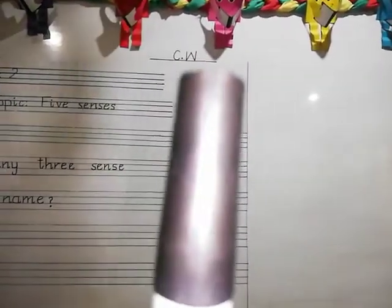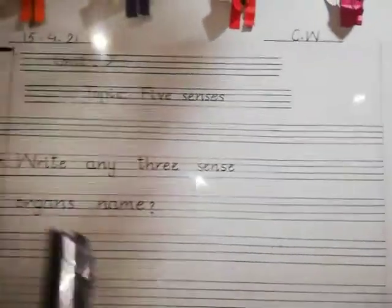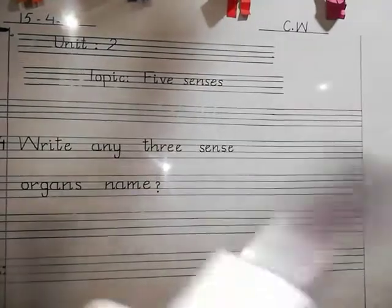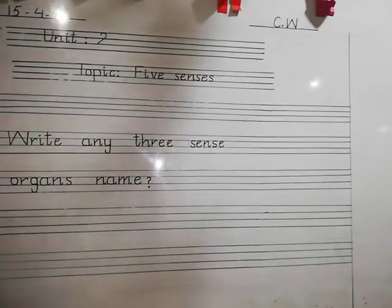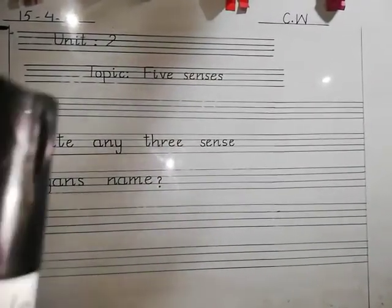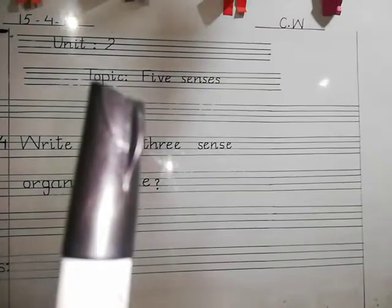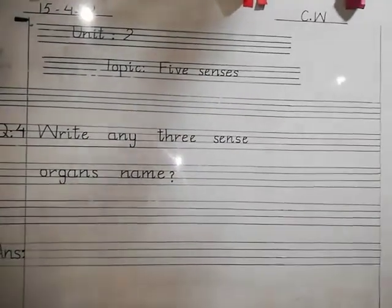In the center of the first line, you have to mention C.W. In the right corner, you have to mention today's date, that is Thursday. After that, in the first four lines you have to mention unit number 2. In the second four lines, you have to mention today's topic. The topic is our 5 senses.